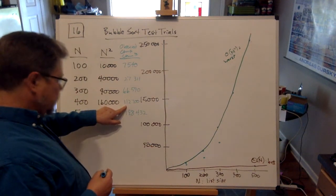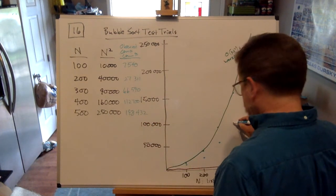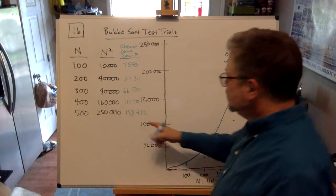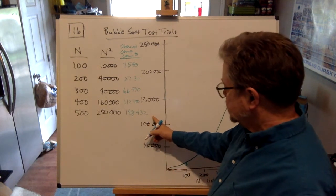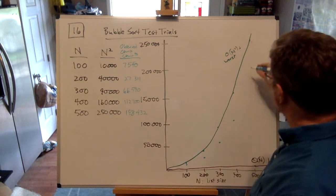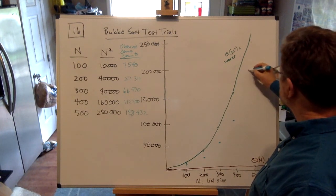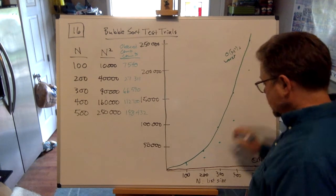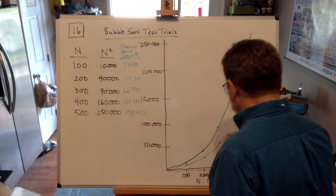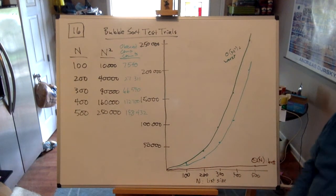112,700 for 400 would be about right there. And then the last one: 198,432 for 500, all the way up here, not quite 200,000. We'll also want to connect those dots to see how our experimental results compare to our expectations.